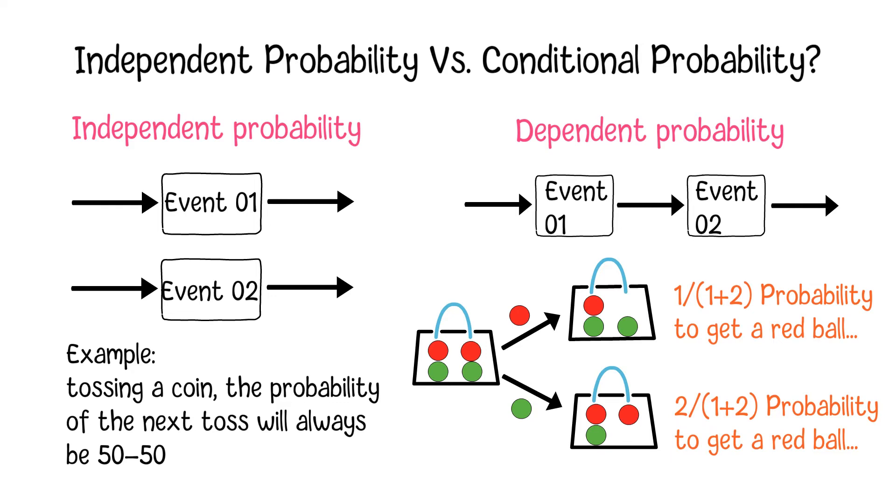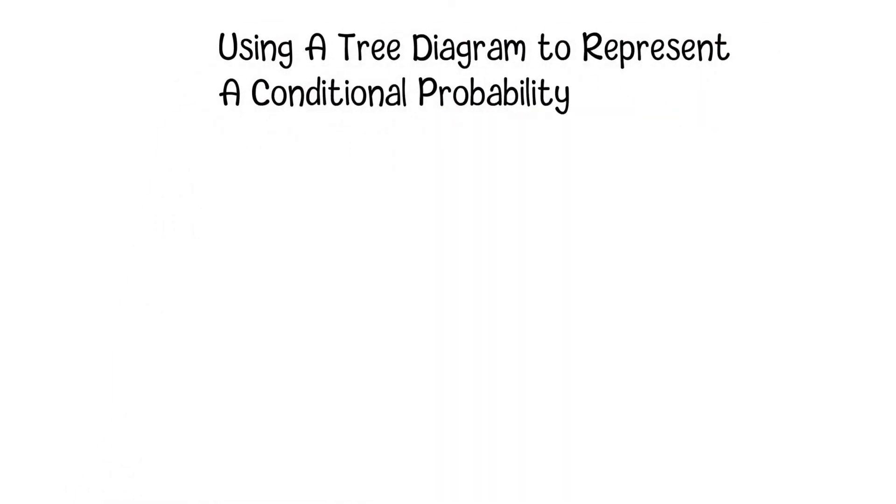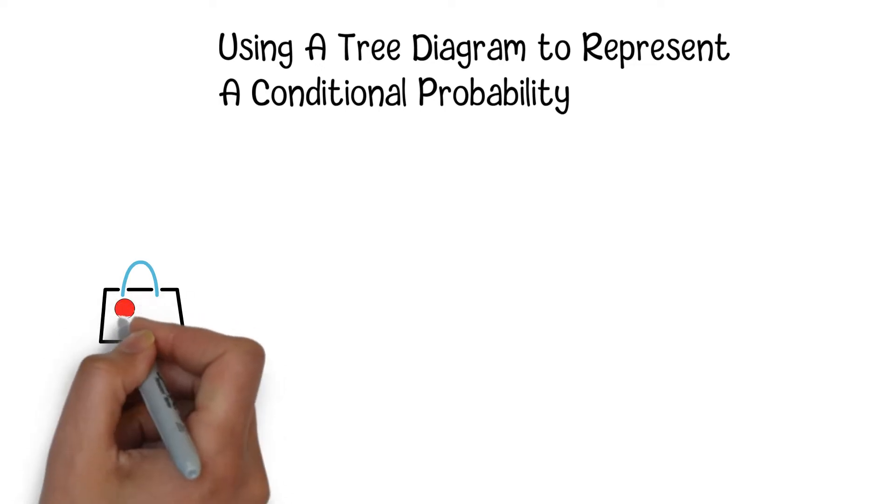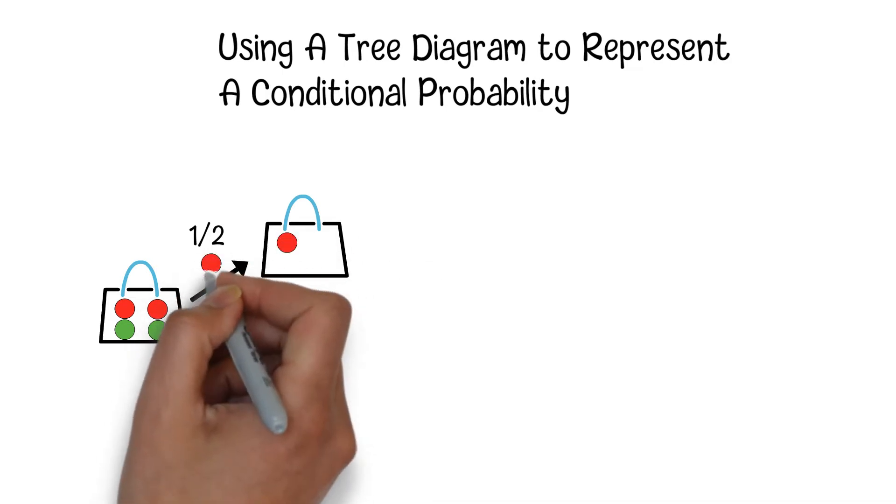In most cases, we can simply use a tree diagram to illustrate a conditional probability. Let's revisit the previous red and green ball example. In the first round, you will get a half chance to get a red or green ball.